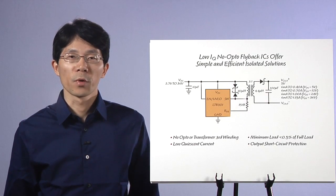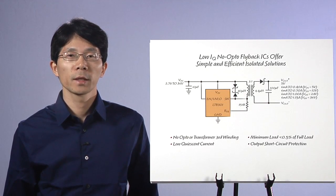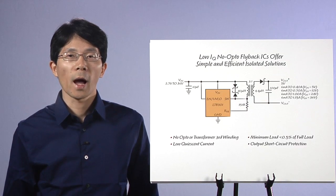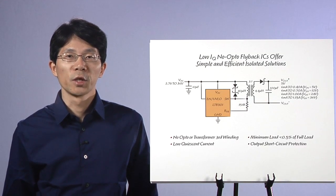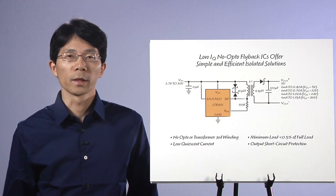The flyback converter is typically the first choice for engineers looking for isolated power supplies below 50 watts. These isolated power supplies generally require opto-isolators or extra transformer windings to regulate the output voltage.